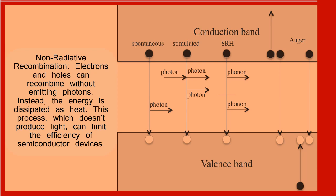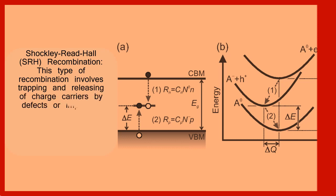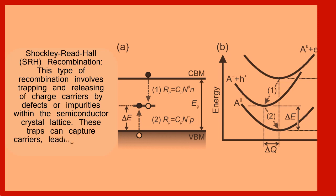can limit the efficiency of semiconductor devices. Shockley-Reed Hall, SRH, recombination. This type of recombination involves trapping and releasing of charge carriers by defects or impurities within the semiconductor crystal lattice. These traps can capture carriers, leading to non-radiative recombination.